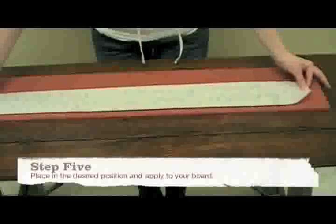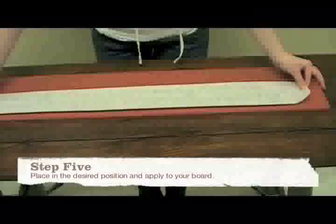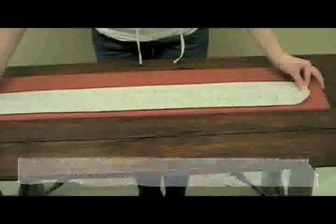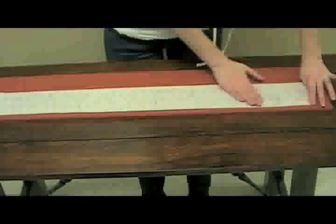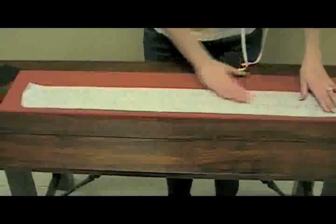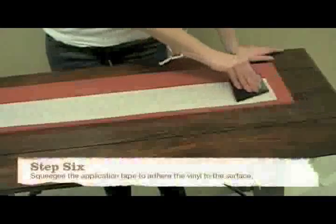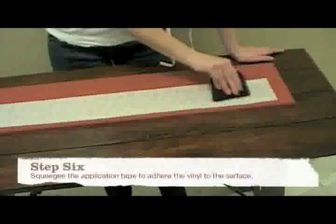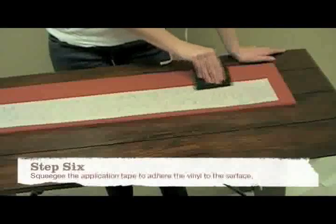Step 5. Place in the desired position and apply to your board. Step 6. Squeegee the application tape to adhere the vinyl to the surface.